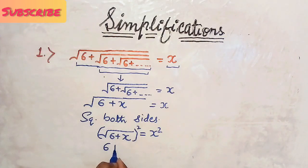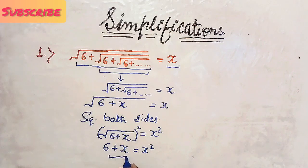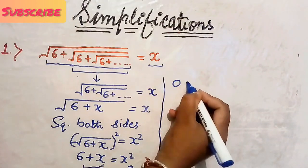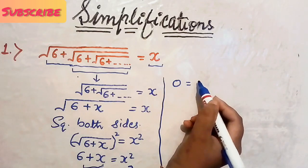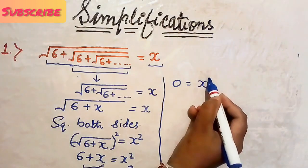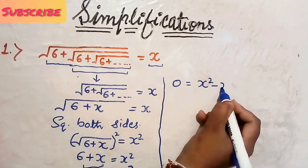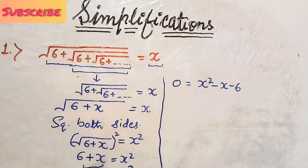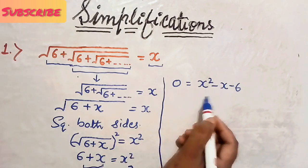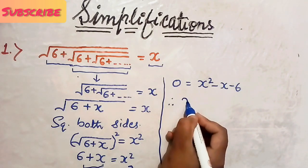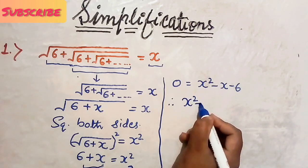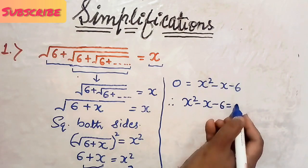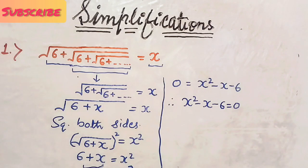The square root of 6 plus X, whole square, equals 6 plus X, and on the right side we have X square. Now let us simplify it — take 6 plus X to the right side and the equation becomes 0 equals X square minus X minus 6. Let us exchange the sides and our equation will be X square minus X minus 6 equals 0.